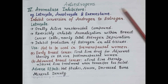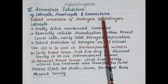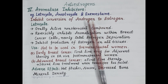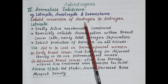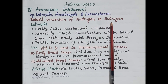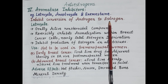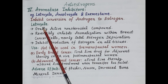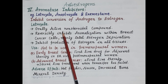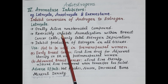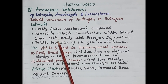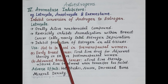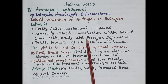Now let's talk about aromatase inhibitors — letrozole, anastrozole, and exemestane. These drugs inhibit the aromatase enzyme, preventing conversion of androgen to estrogen. Since estrogen plays an important role in the development of breast cancer, these drugs are used in its management. Letrozole is an orally active non-steroidal compound that reversibly inhibits aromatization within breast cancer cells, preventing synthesis of estrogen in those cells.